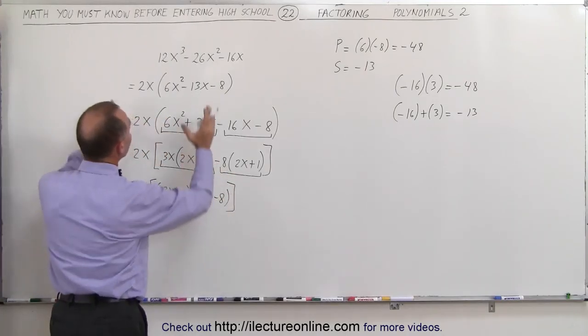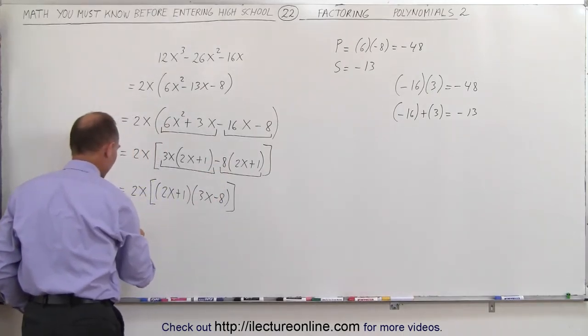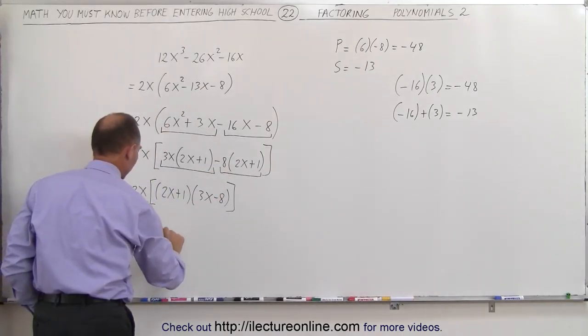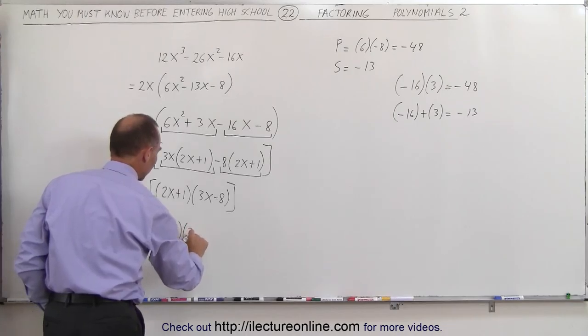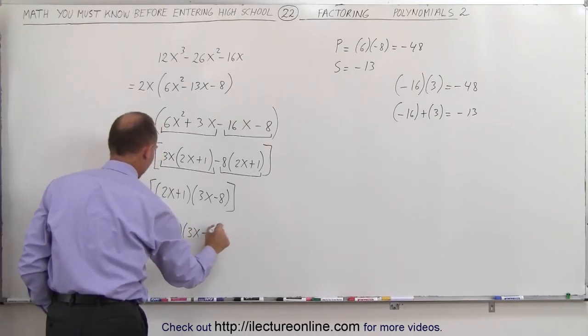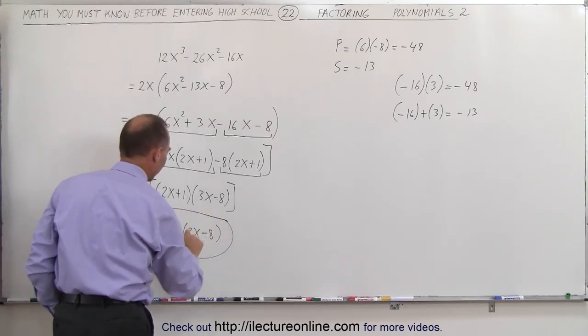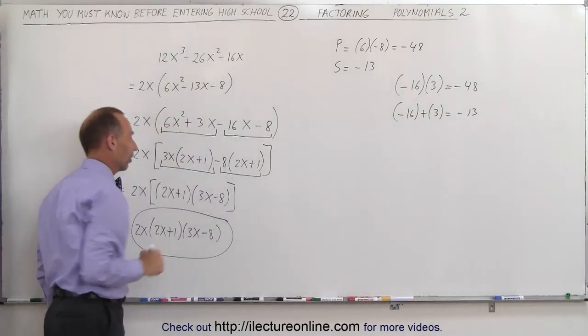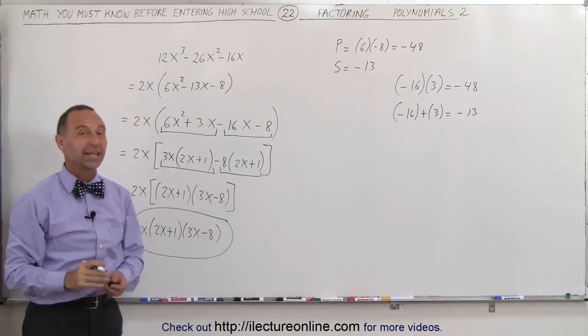So ultimately, when I take this and I factor it, this can be factored as 2x times 2x plus 1 times 3x minus 8. And that's the final answer. That's the factored form of this original problem. And that's how it's done.